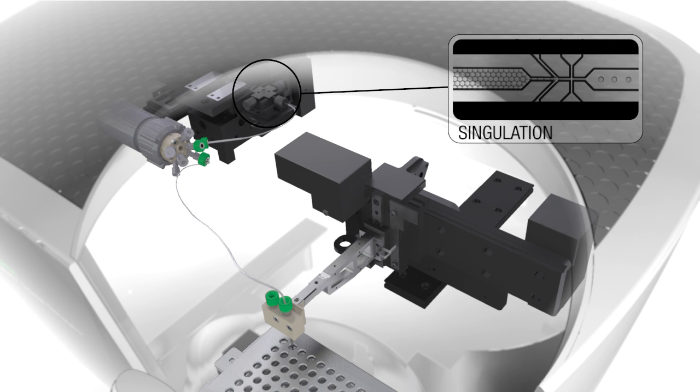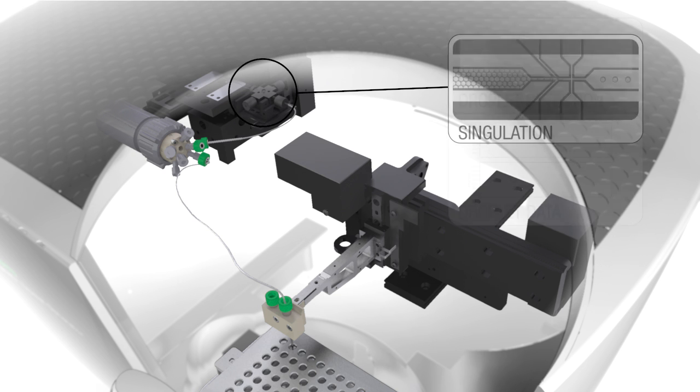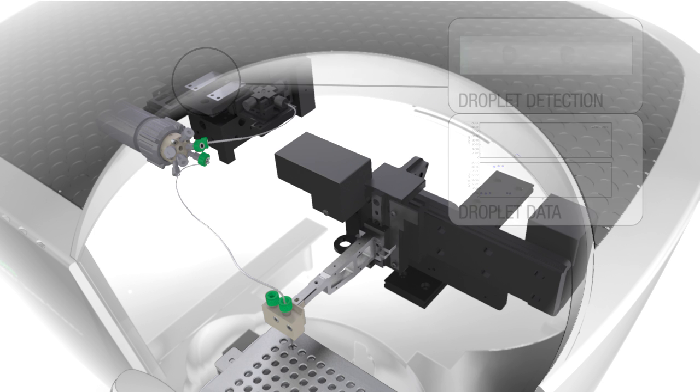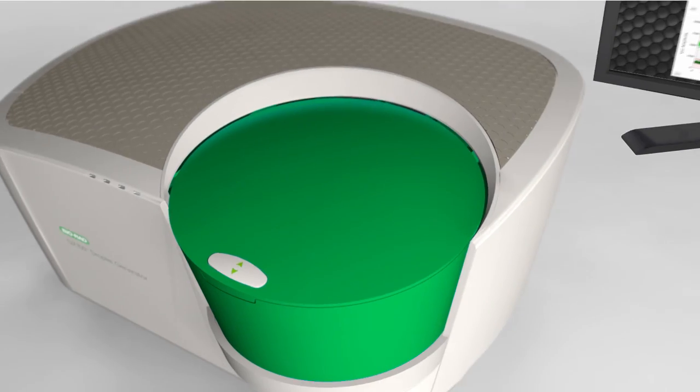The droplet reader automatically sips each sample, singulates all the droplets from a sample, and then streams them in a single file past a two-color fluorescence detector. The detector reads each droplet in turn at the rate of thousands of droplets per second and determines which droplets emit fluorescence and which do not.